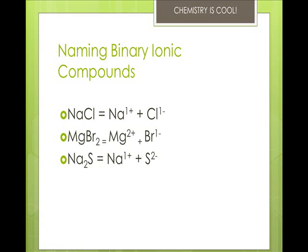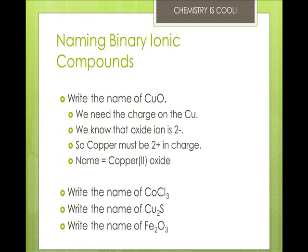The problem comes with transition metals because the cation name includes the charge, and the compound must be neutral — meaning it has the same number of positive and negative charges. So you use the negative charge to figure out the charge on the cation. For example, with copper oxide, the oxide ion is 2−, so copper must be 2+ for them to balance. The name is copper(II) oxide.